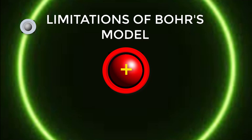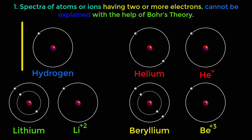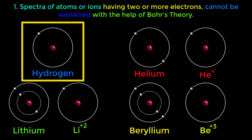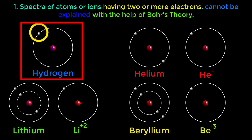The first limitation is that spectra of atoms or ions having two or more electrons cannot be explained with the help of Bohr's theory. Look at this atomic structure of hydrogen atom. Hydrogen atom has only one electron around its nucleus, so it can be explained with the help of Bohr's theory.